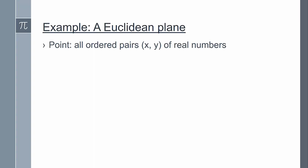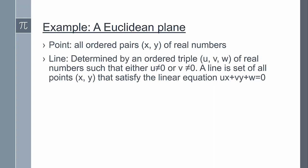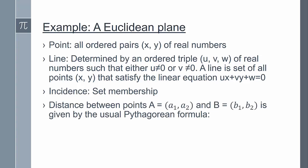The points of this interpretation are going to be all ordered pairs (x, y) of real numbers. Then a line is going to be determined by an ordered triple (u, v, w) of real numbers, such that either u is non-zero or v does not equal zero. And then a line is going to be the set of all points (x, y) that satisfy the linear equation ux + vy + w = 0. Incidence is set membership, so a point is on a line when that point (x, y) satisfies the linear equation associated with that ordered triple. We can define distance between two points in this real plane by the usual Pythagorean formula for the distance from A to B as the square root of (a1 - b1)^2 + (a2 - b2)^2.